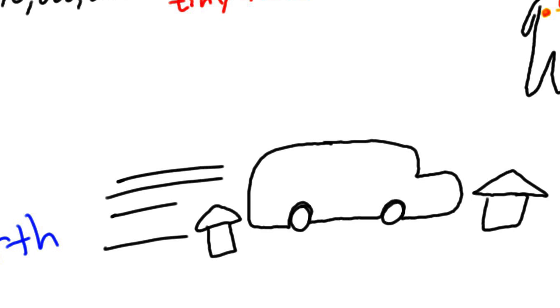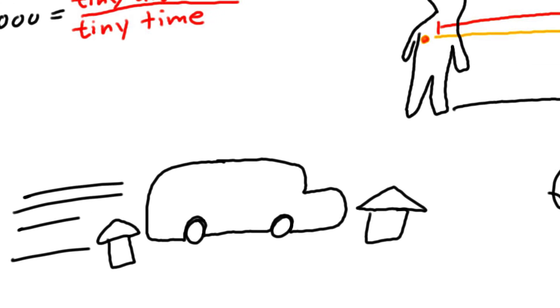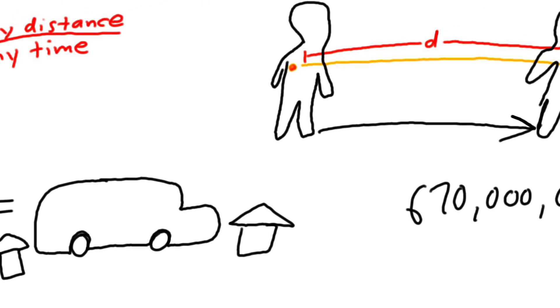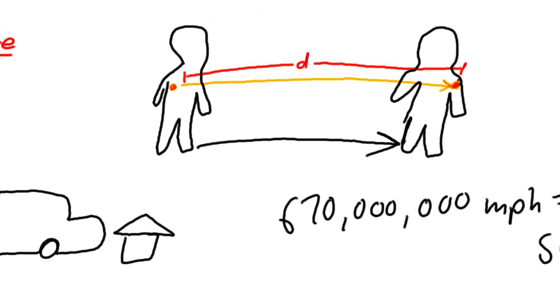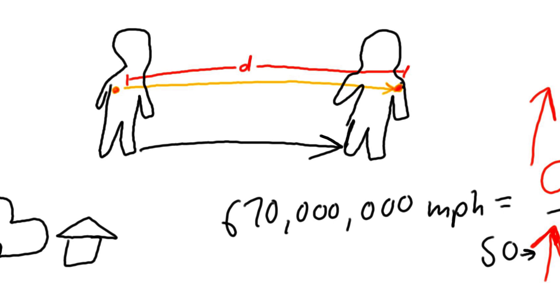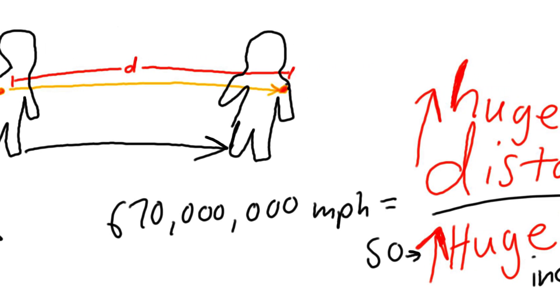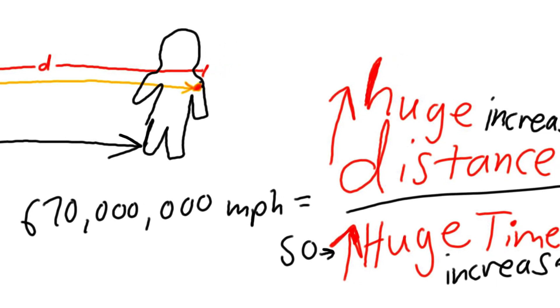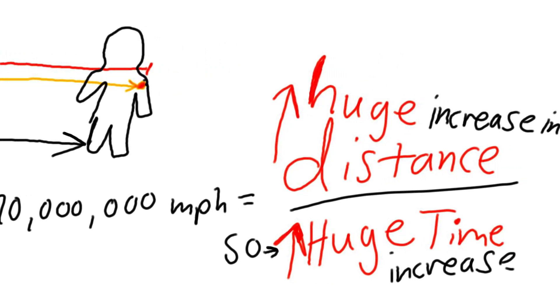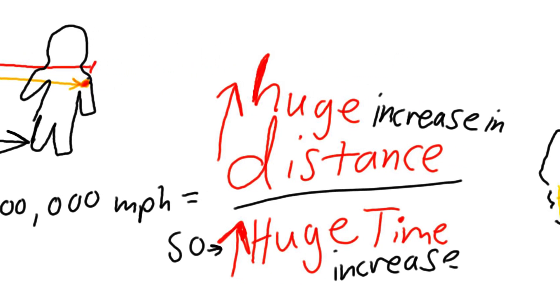But when your body moves really, really, really fast compared to Earth, much closer to the speed of light, then your photons have to travel a much larger distance for those same bodily activities to occur. Since the speed of the photons and fundamental particles is constant, but they need to cover a much larger distance, they will have to do it in a much longer time.